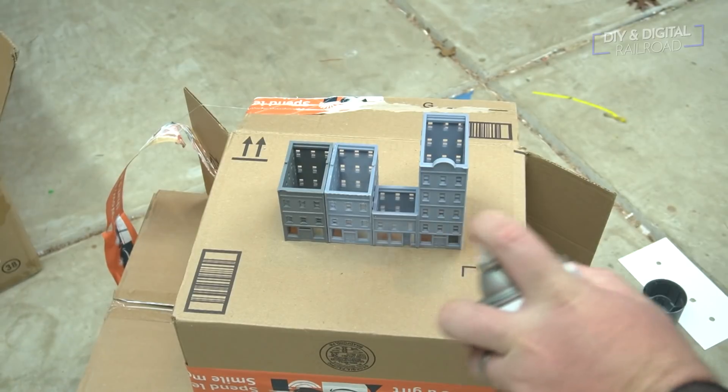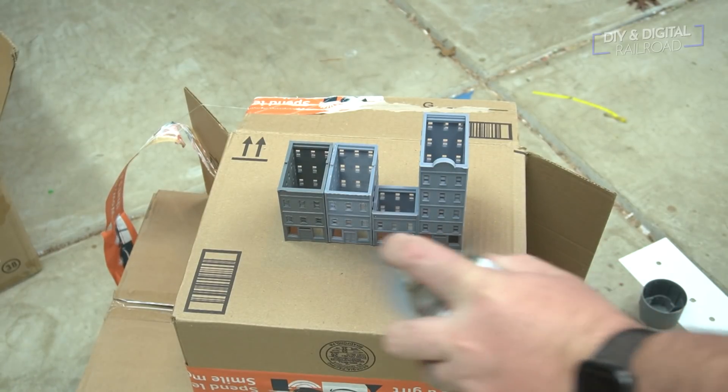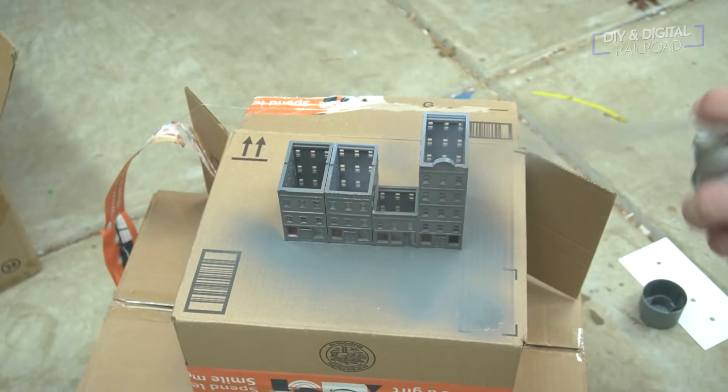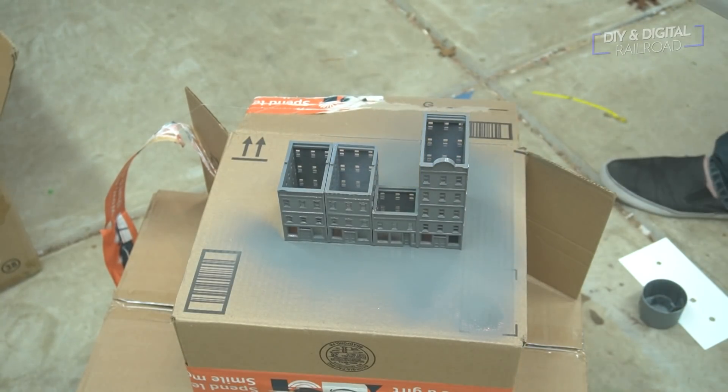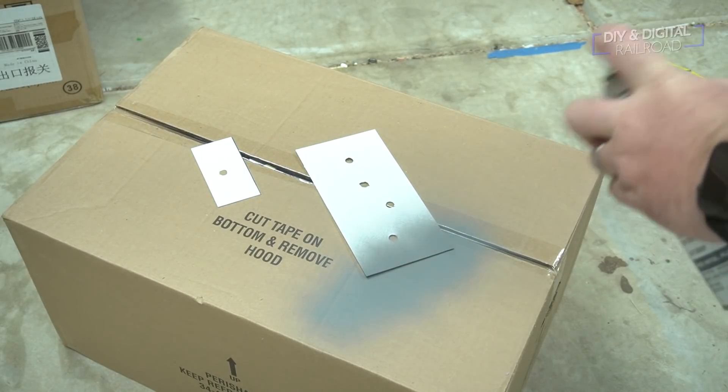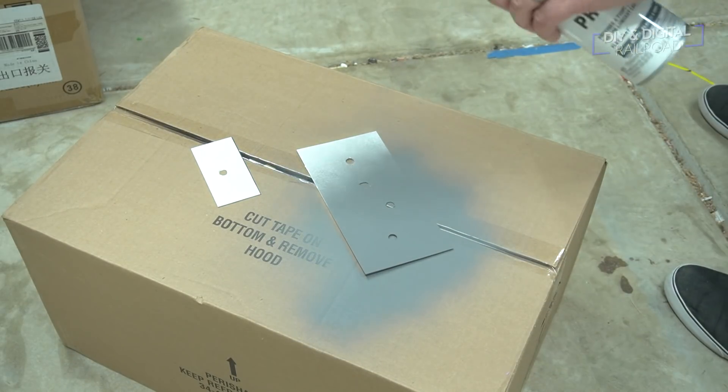Now it is time to spray paint. And as with any time you're using spray paint, I always recommend that you prime the models first. I'm using some of Rustoleum's flat gray primer here as I use for just about everything. So I'm going to be priming these buildings first and then I'm also going to be priming the styrene sheets that I'm using for the base as well because I will be spray painting those too.